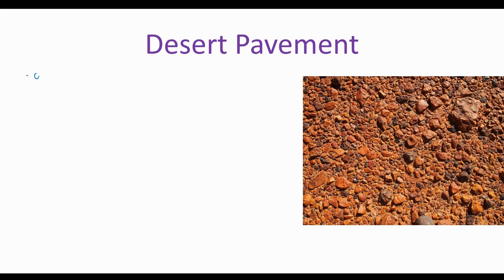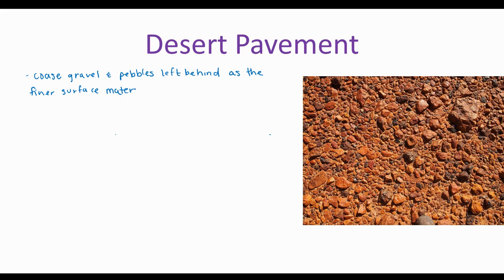Desert pavement is pretty cool. Desert pavement is the coarse gravel and pebbles left behind as the finer surface materials are moved by wind. Anything that was fine and light enough for the wind to carry was picked up, and then all the heavier stuff like the gravel and pebbles is left behind and creates this landform that we call desert pavement. This is another erosional feature of wind.